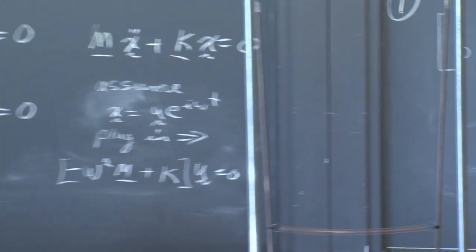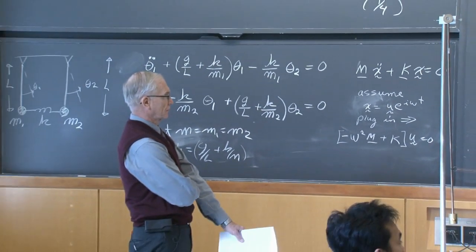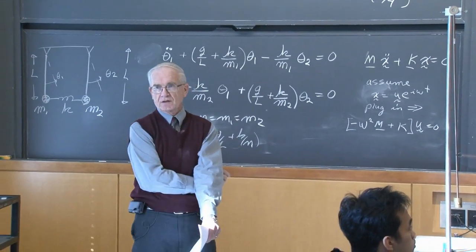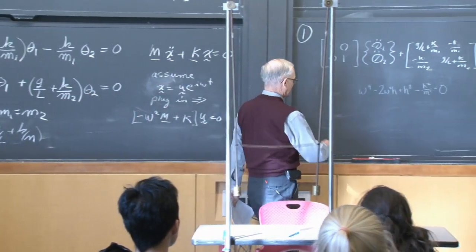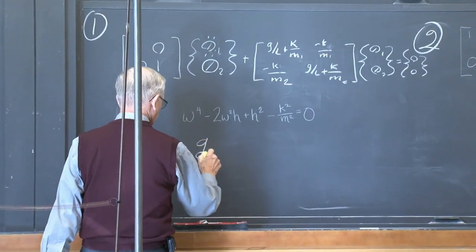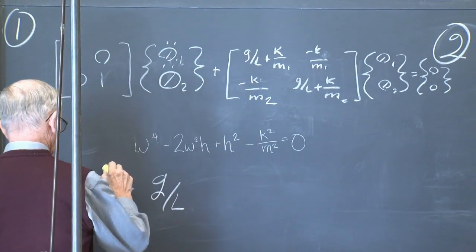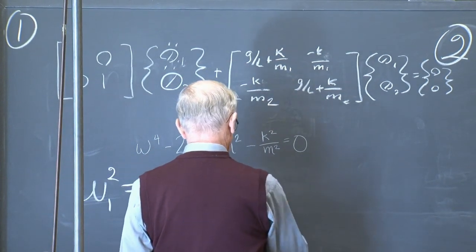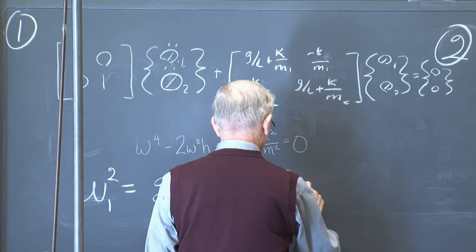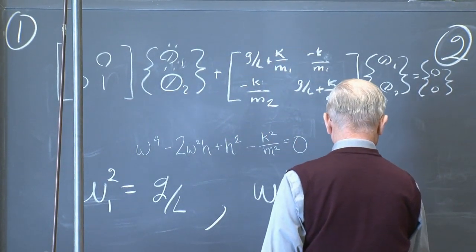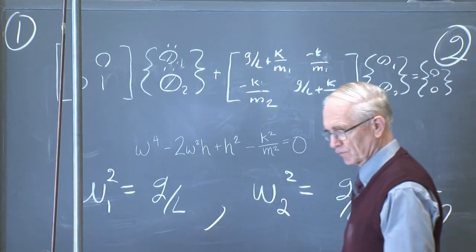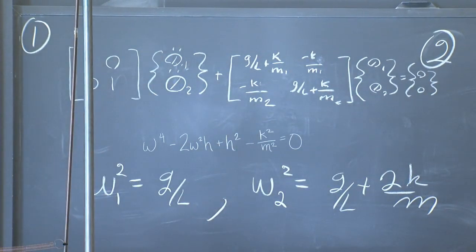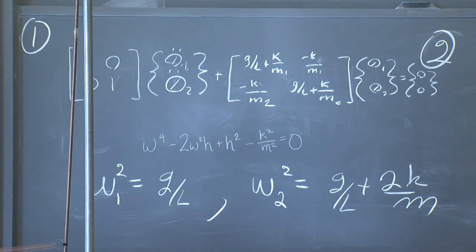People are getting all the same answers. If you solve the characteristic equation, you get omega 1 squared equals g over l, and omega 2 squared equals g over l plus 2k over m. Those are your two natural frequencies. Now find the mode shapes.